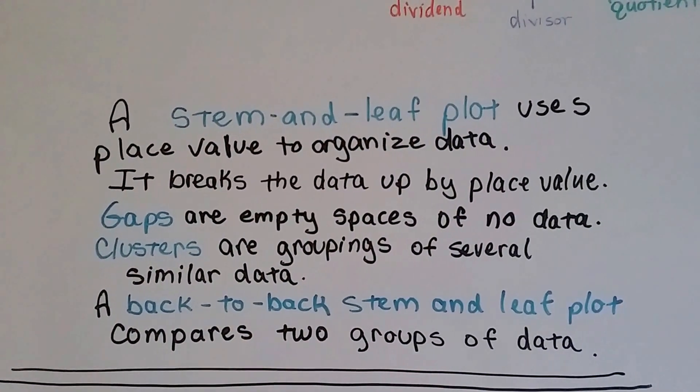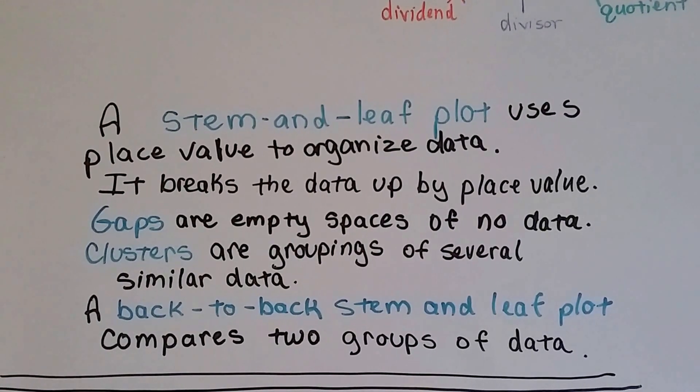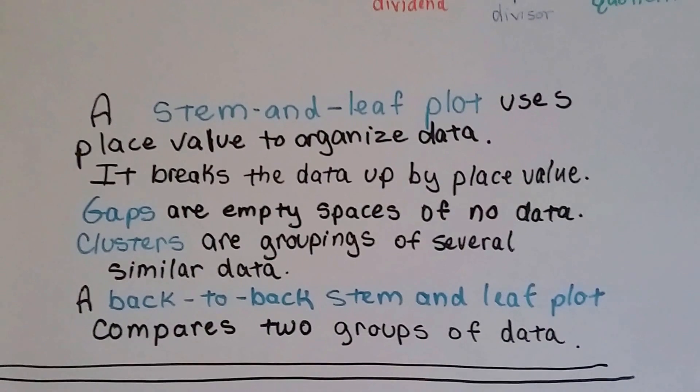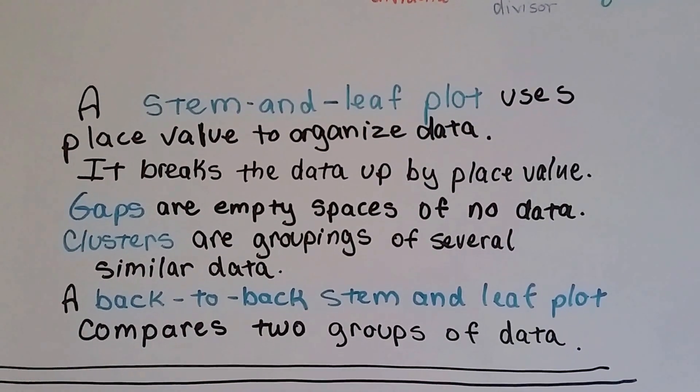It breaks the data up by place value. Gaps are empty spaces of no data. Clusters are groupings of several similar data. And a back-to-back stem and leaf plot compares two different groups of data.